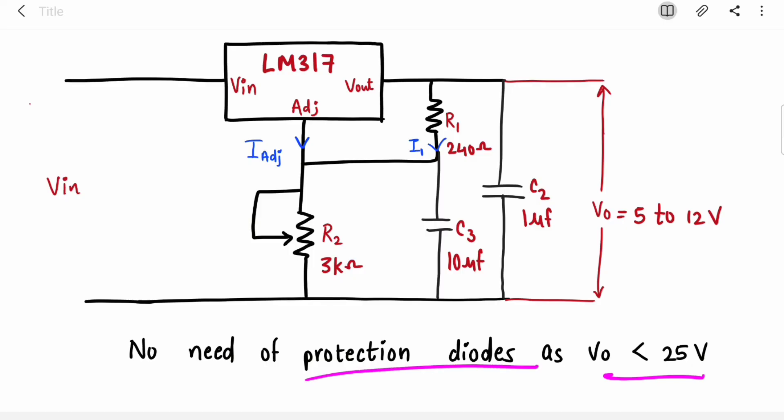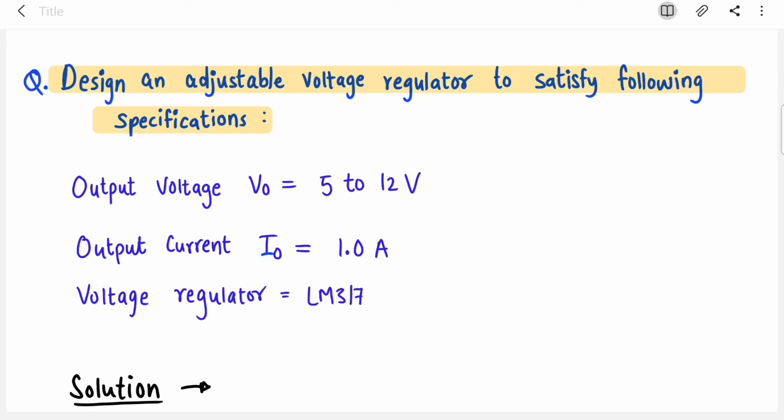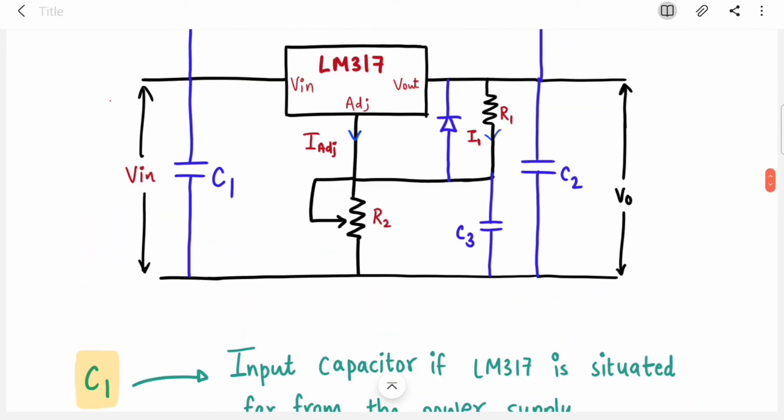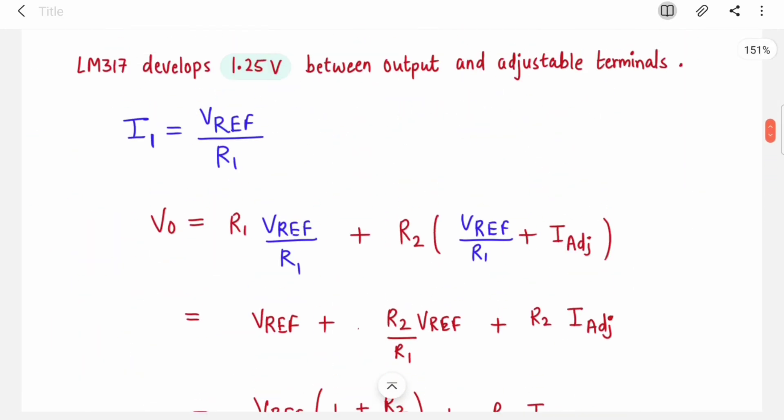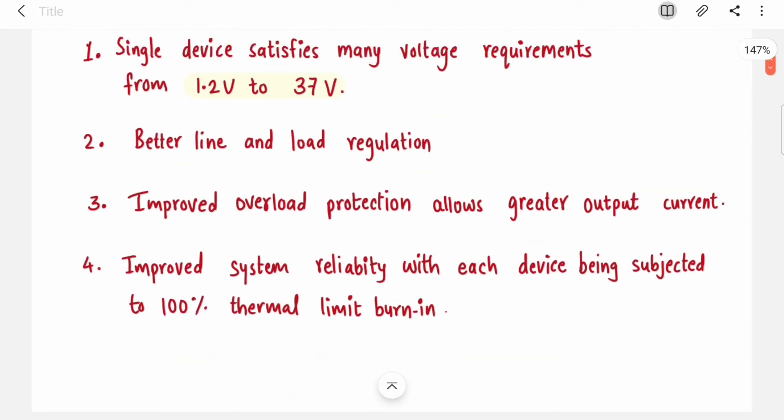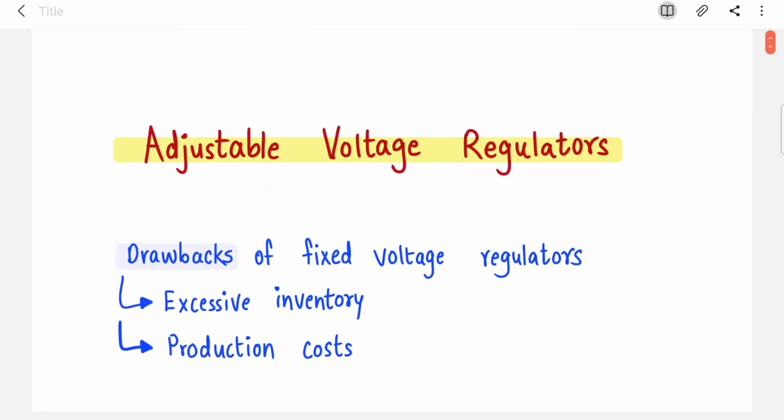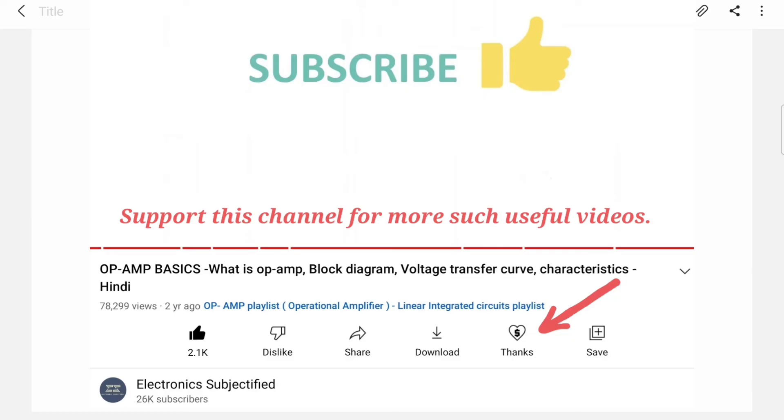As your output voltage is less than 25 volts, you do not need protection diodes. That's all about designing adjustable voltage regulators. We have covered everything like connection diagram, pin diagram, and basic concepts. If this video was helpful, hit that like button, share my whole playlist with your friends, and subscribe to my channel. Thank you.